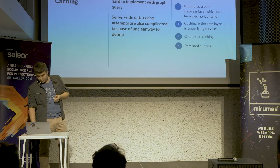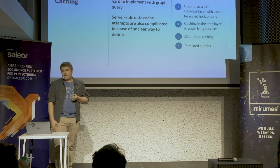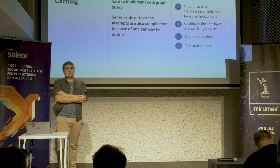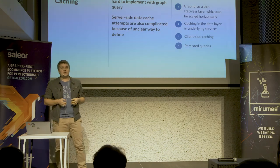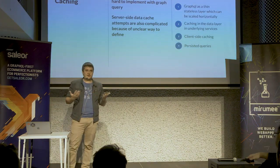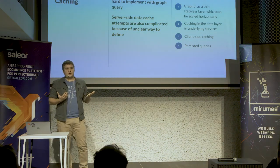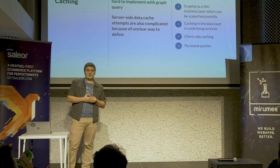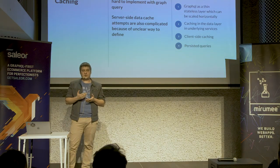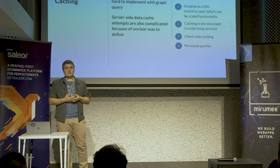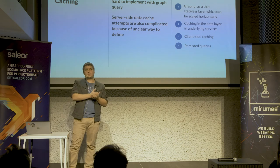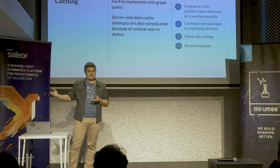GraphQL is often criticized for lacking HTTP caching. I would say the solution is: don't treat GraphQL as REST. Your GraphQL layer should be a really thin, stateless layer that you can easily scale horizontally, and you can implement HTTP caching or even data-layer caching between the GraphQL API and your service API.